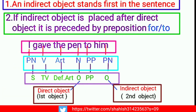Point number eight: an indirect object stands first in the sentence. Use the indirect object first. The sentence must follow this rule. If the indirect object is placed after the direct object, it must be preceded by a preposition such as 'for' or 'to.' This is the last rule.